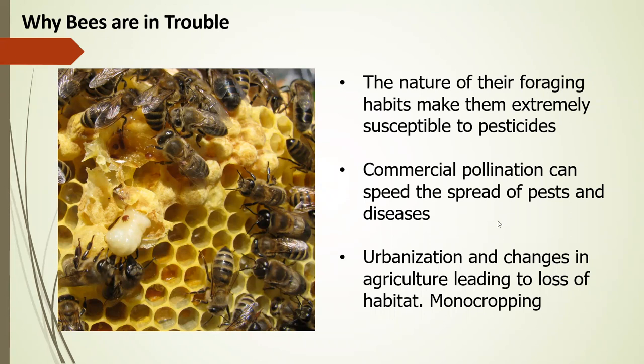Urbanization and changes in agriculture are leading to loss of habitat. Monocropping means there's not really good forage around. Urbanization can be a pro or a con — lately a lot of people have been into pollinator plants, so you actually see urban areas being a hotspot for honeybees rather than a desolate concrete area.